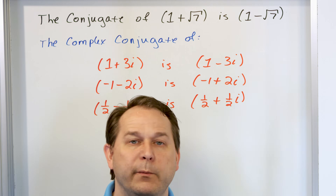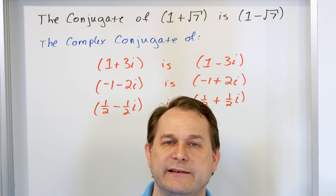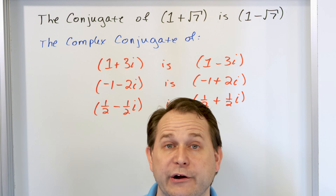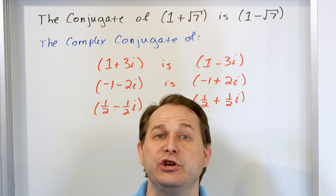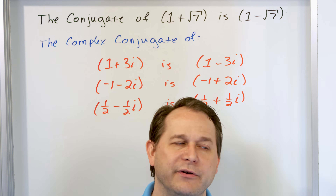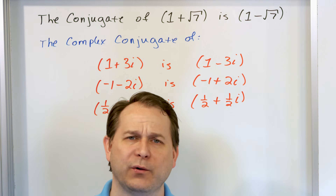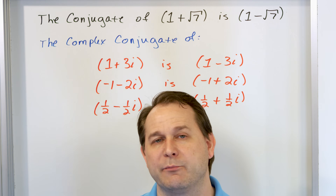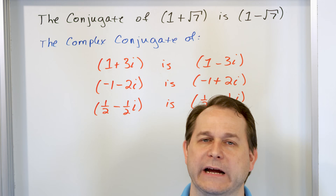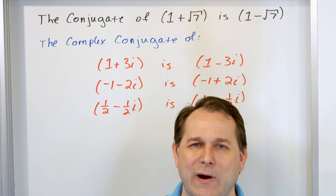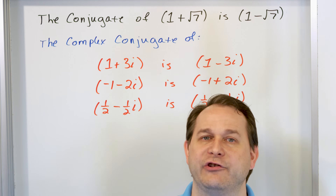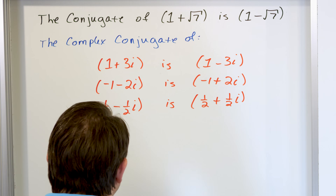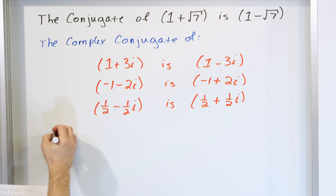What ends up happening is that when we multiply a complex number times its conjugate, all of the imaginary numbers disappear because of cancellations. So we're going to use the complex conjugate to get rid of any imaginary numbers in the bottom of fractions. Since the imaginary number i is actually a radical — the square root of negative one — we don't want any imaginary numbers in the denominator of fractions.